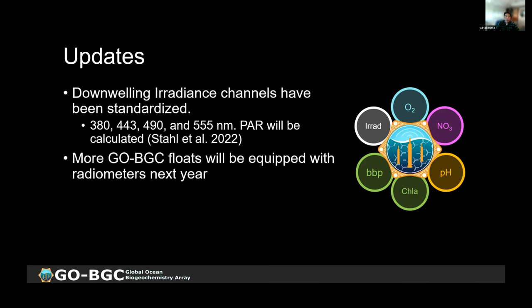A working group on downwelling irradiance channels has now standardized the channels for BGC Argo. The recommendation is that the downwelling radiometer should have 380, 443, 490, and 555 nanometer channels. PAR can be modeled very accurately from these four wavelengths, so we no longer recommend a dedicated PAR channel — it will be calculated from the others. GOBGC APEX floats next year will be equipped with radiometers.